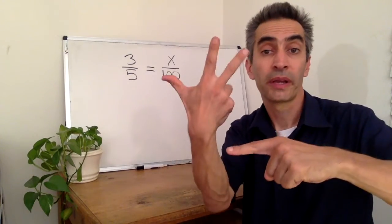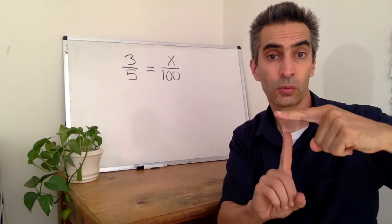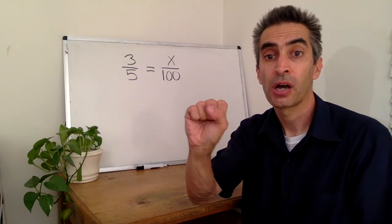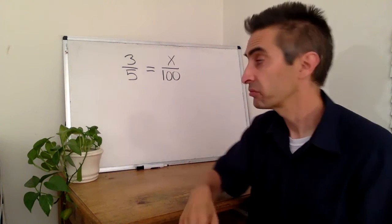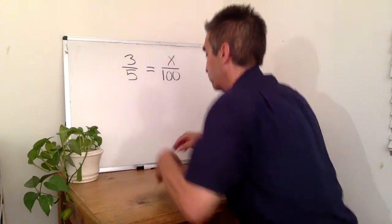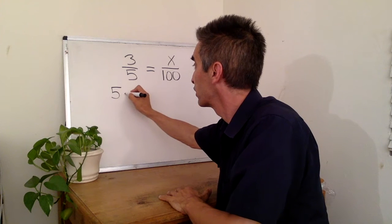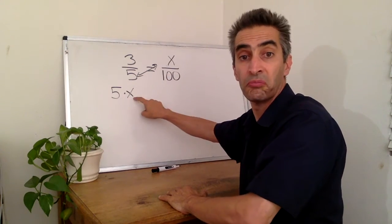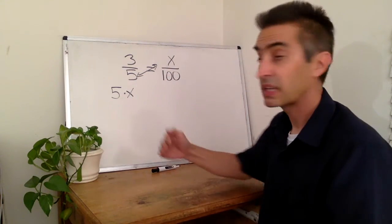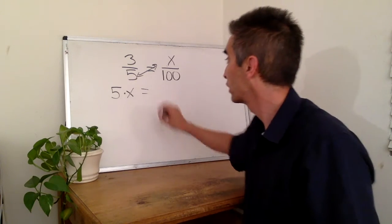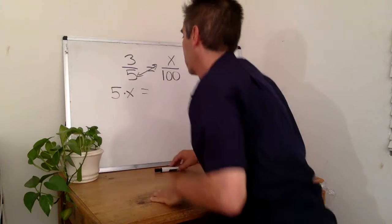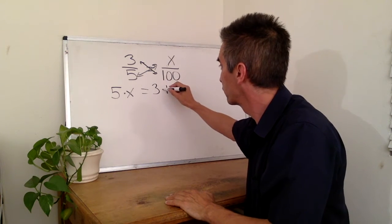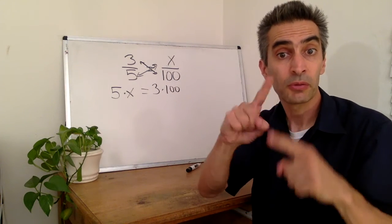Now we're going to solve a problem here. Three-fifths equals x over 100. How do we solve it? Cross-multiply. Five times x. Five times x equals three times 100.